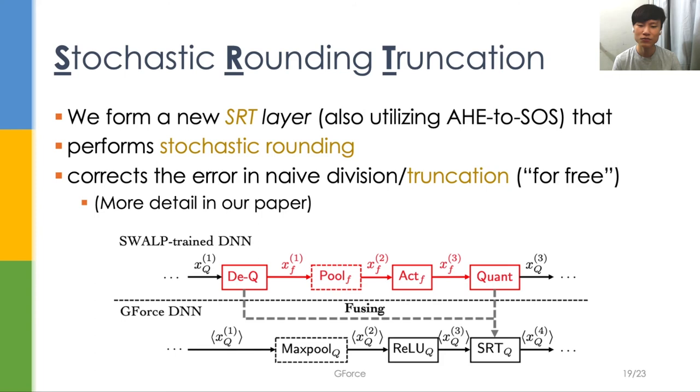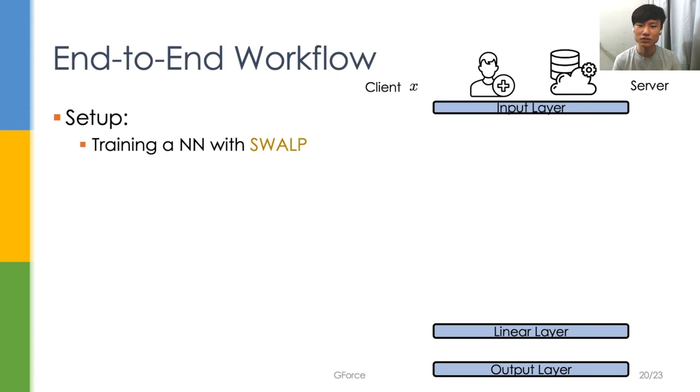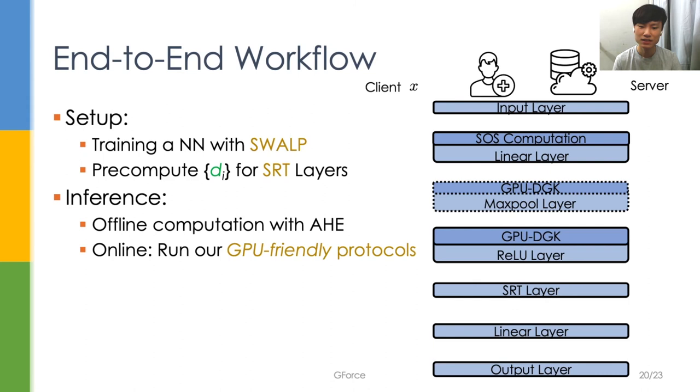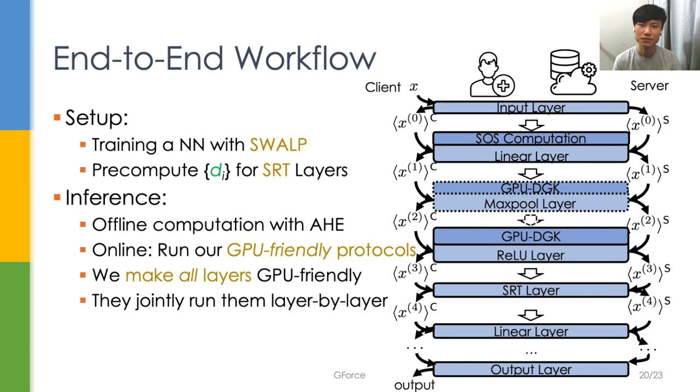Putting everything together, GeForce has a setup phase where the server trains the neural network with SWALP and pre-computes the divisor for each SRT layer. For the oblivious inference, the server and the client jointly perform offline computation over AHE. When the client has a query, it goes into online phase. The server and the client jointly run our GPU-friendly protocols layer by layer.